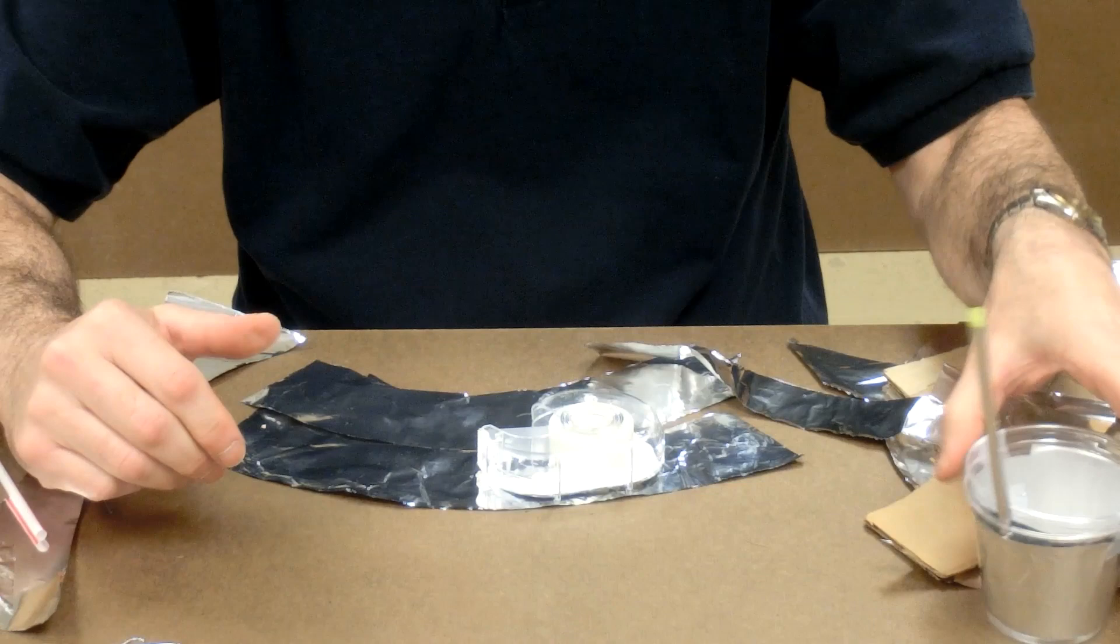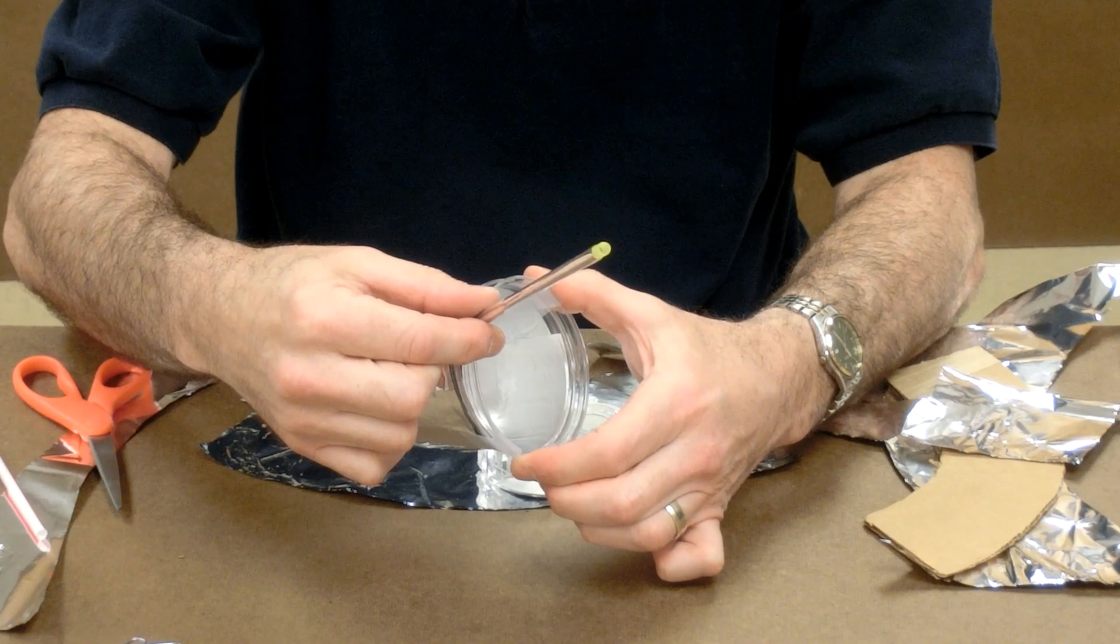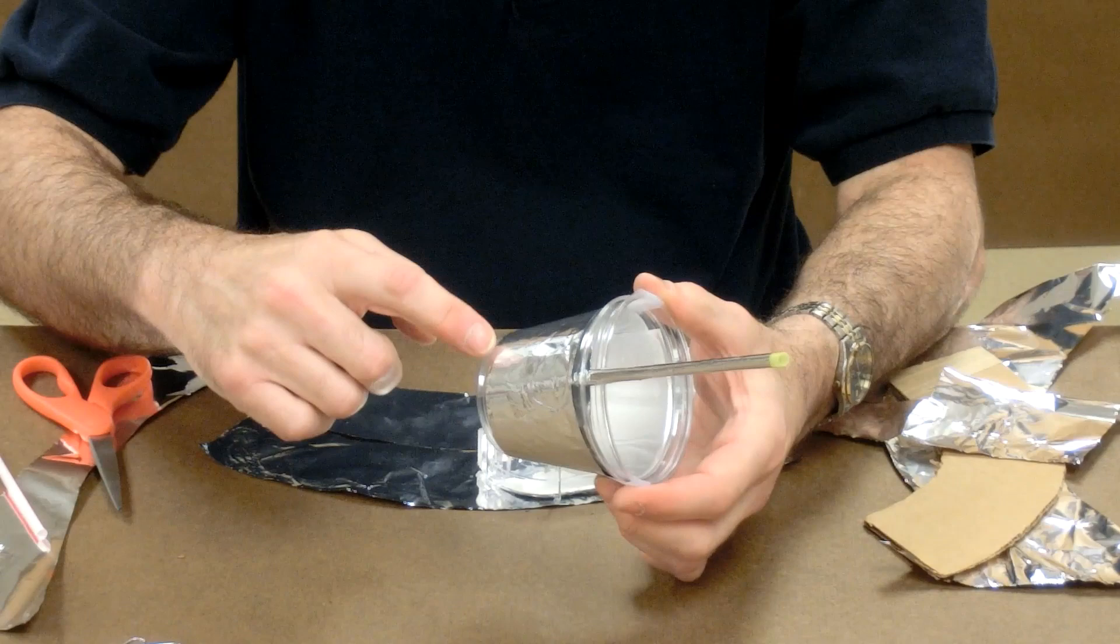To make it, you need two plastic cups. You coat each one with aluminum foil. You take a straw and coat it with aluminum foil, usually using a glue stick to help get that on. And then you put one cup inside of the other.